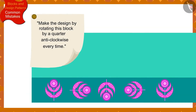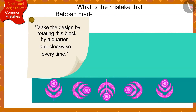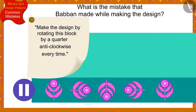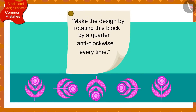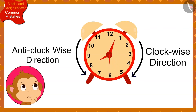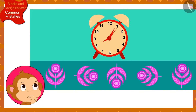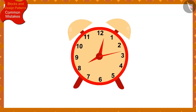Children, can you tell by looking at Banno's instructions and Babban's design, what is the mistake that Babban made while making the design? If you wish to, you may stop the video and find the answer. Actually, as per the instructions written by Banno, Babban had to rotate the block by a quarter in the anti-clockwise direction every time. But Babban got confused between the clockwise and anti-clockwise directions and accidentally made the pattern by rotating the block by a quarter in the clockwise direction every time. Children, remember: whenever you want to know the clockwise direction, look at the direction of the movement of the needles in a clock.